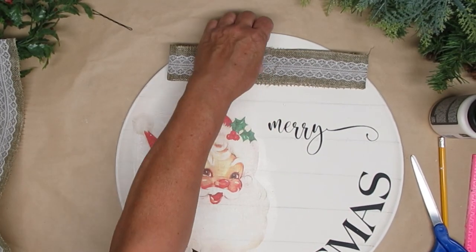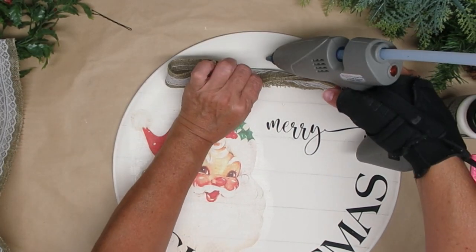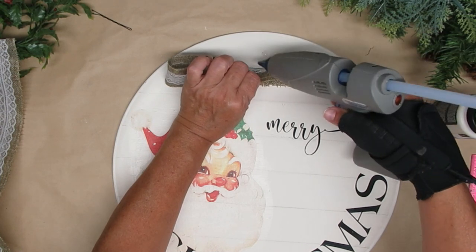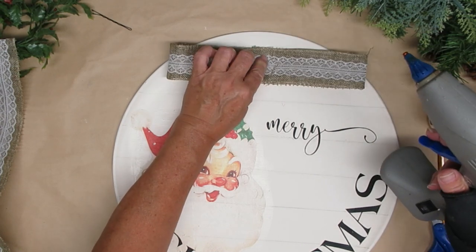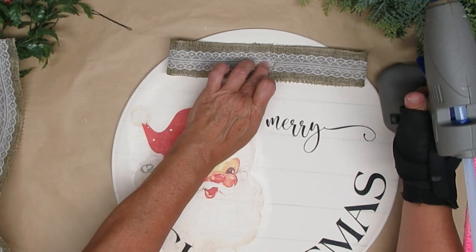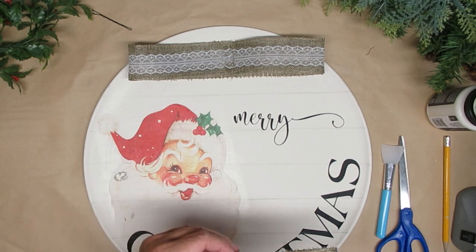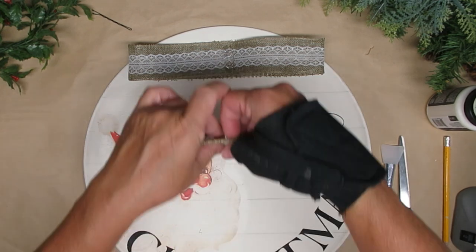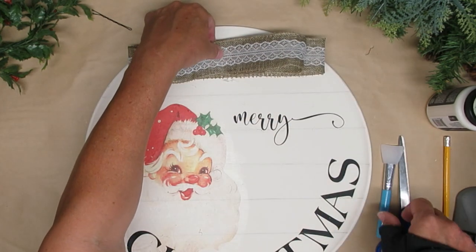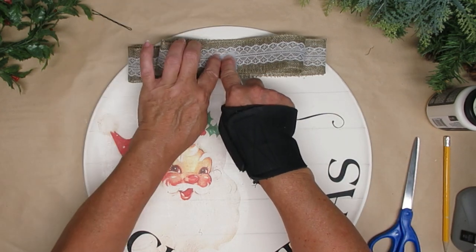I wanted to keep this looking vintage so I'm using some burlap ribbon with a little bit of lace on it, and I did pick this up at the Dollar Tree. I've just created two loops and I'm hot gluing them right down onto the pizza pan. I'm going to repeat this process with another loop of bows but I'm going to make this one just a little bit smaller.